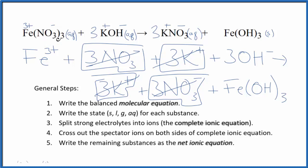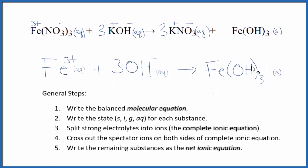Iron 3 nitrate plus potassium hydroxide. I'll clean this up. Write the states. We'll have our net ionic equation. And this is our balanced net ionic equation.